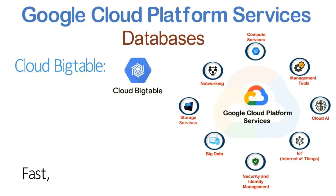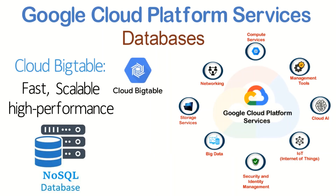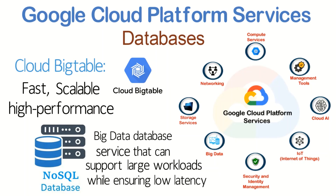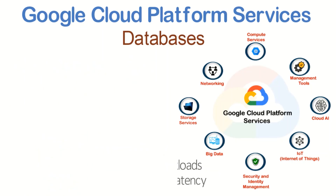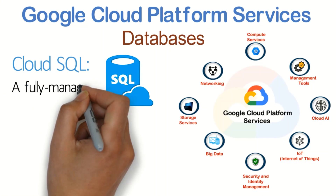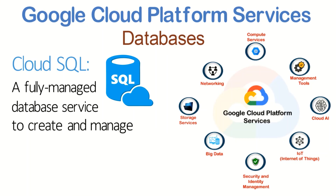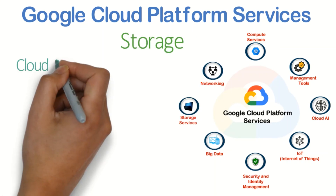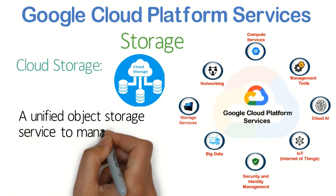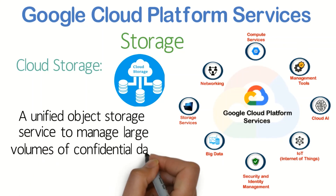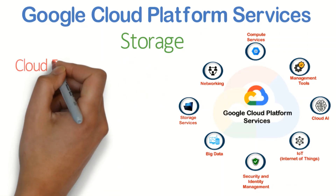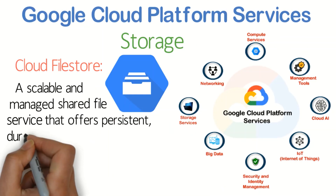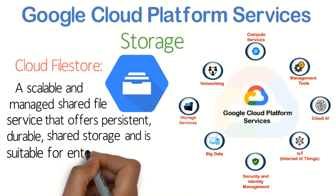Databases: Cloud Bigtable is a fast, scalable and high-performance NoSQL big database service that can support large workloads while ensuring low latency. Cloud SQL is a fully managed database service to create and manage relational databases on Google's infrastructure. Storage: Cloud Storage is a unified object storage service to manage large volumes of confidential data on Google's infrastructure. Cloud Filestore is a scalable and managed shared file service that offers persistent, durable shared storage and is suitable for enterprise applications.